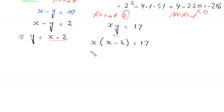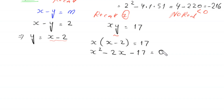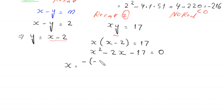Expanding: x² − 2x = 17, so x² − 2x − 17 = 0. This quadratic is not factorable, so we solve it using the quadratic formula.